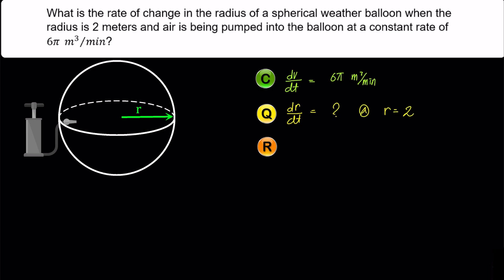The third thing we need to find is the relation that connects the V in the condition with the r in the question. That would be the volume equation of a sphere: V equals 4πr³ over 3.